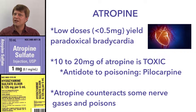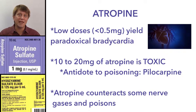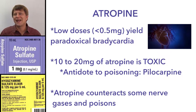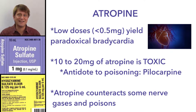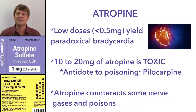Atropine treats bradycardia, or slow heart rate, in emergency settings — so it increases the heart rate. But it has a paradoxical heart rate slowing when given in really low doses. We don't fully understand that effect, but it's important to know. Also, atropine is used as an antidote in certain conditions involving nerve gas, as some nerve gases are acetylcholinesterase inhibitors.